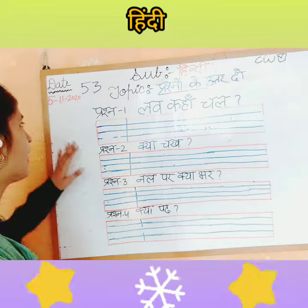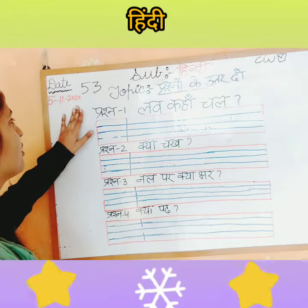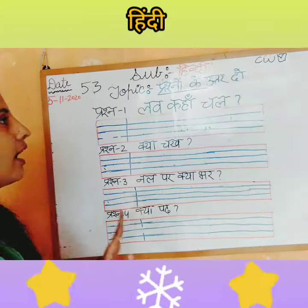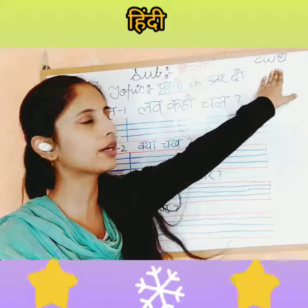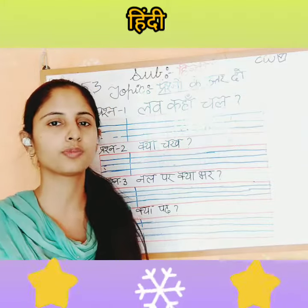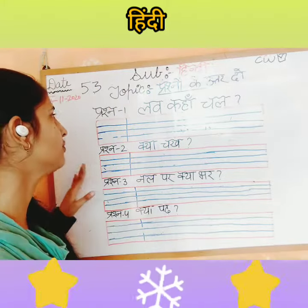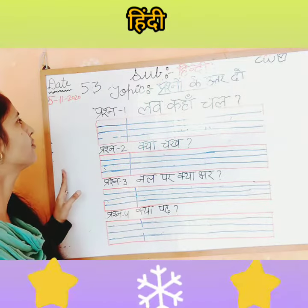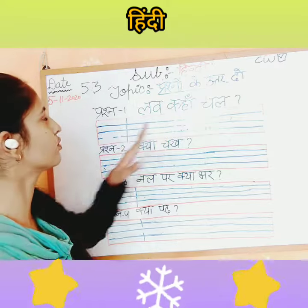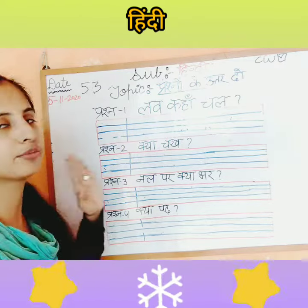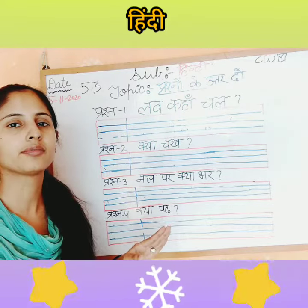Write today's date, that is 5/11/20. After writing the date, you will put CW on the top. Now see, we have Prashno Ken Uttar Do on page number 53.